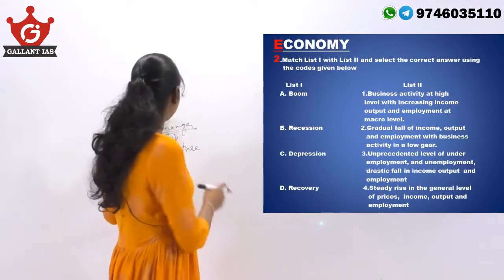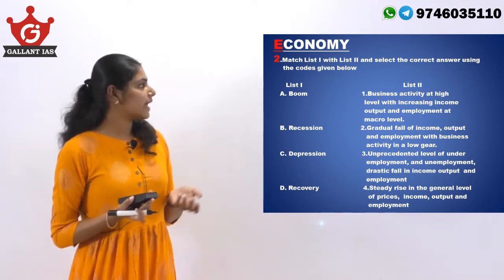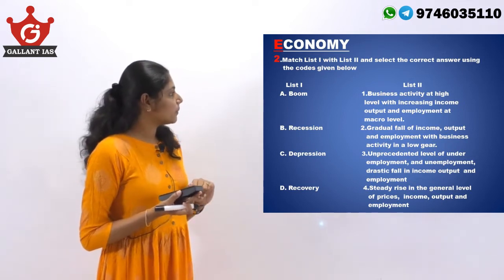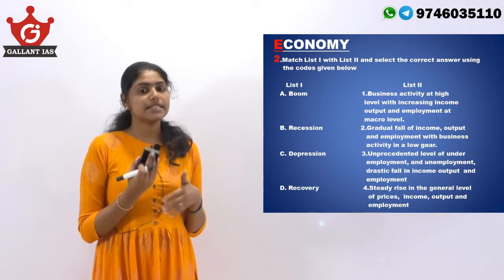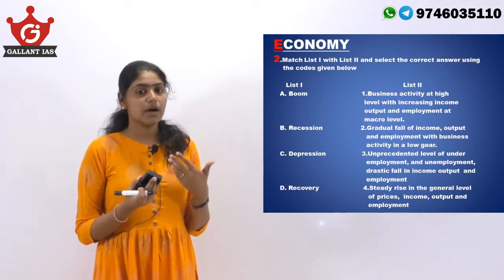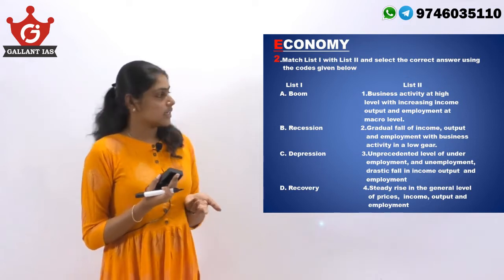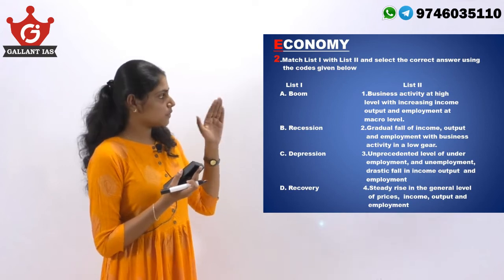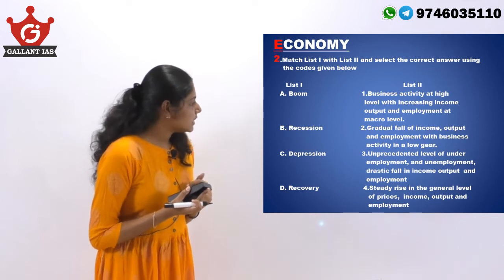Moving to the next question from economics — match list one with list two and select the correct answers using the codes given below. It's a match-the-following type question. The first term is boom. Boom denotes an increase in economic activity for a period of time, resulting in increasing income, output, production and also the employment rate. Option A correctly corresponds to the right statement in list two.